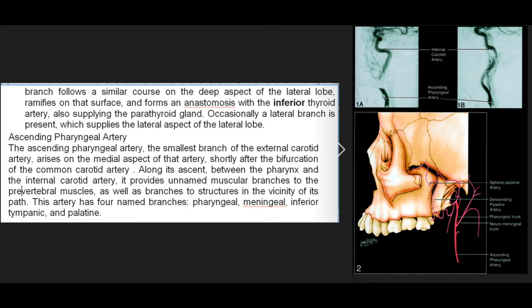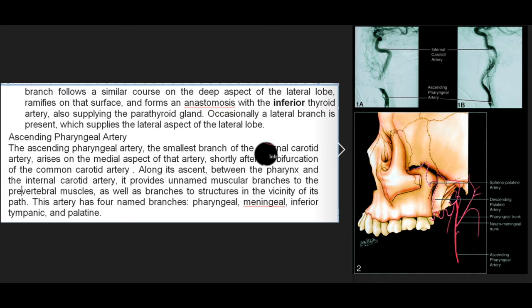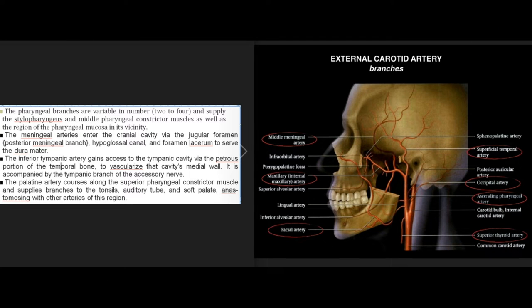The ascending pharyngeal artery ascends between the pharynx and the internal carotid artery, providing unnamed muscular branches to the prevertebral muscles and branches to structures in its vicinity. It has four named branches: pharyngeal, meningeal, inferior tympanic, and palatine. The pharyngeal branches, variable in number (two to four), supply the stylopharyngeus and middle pharyngeal constrictor muscles as well as the pharyngeal mucosa. The meningeal arteries enter the cranial cavity via the jugular foramen, hypoglossal canal, and foramen lacerum to serve the dura mater.